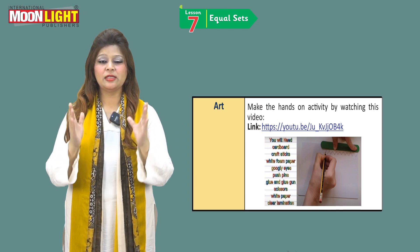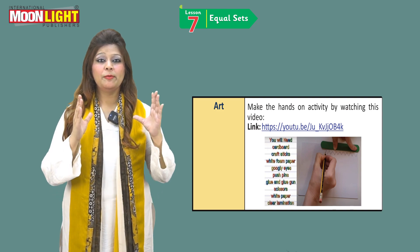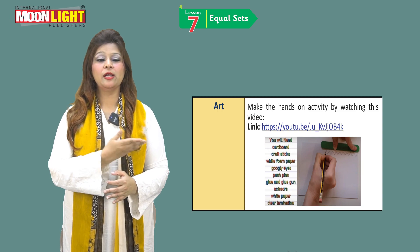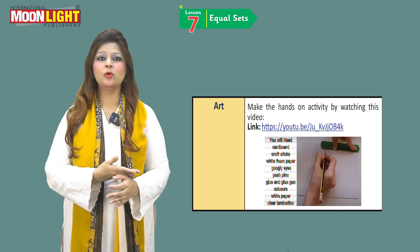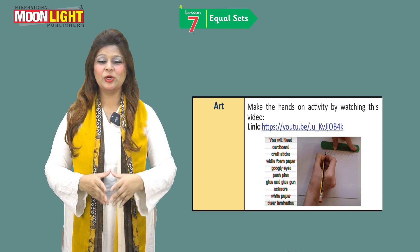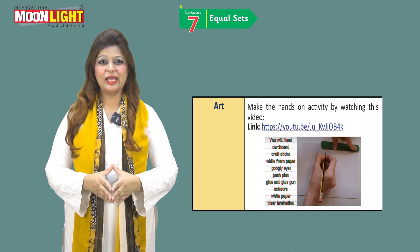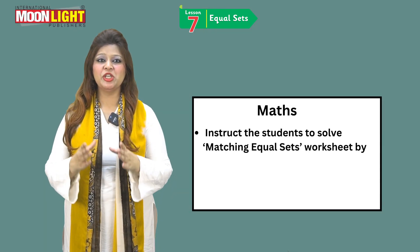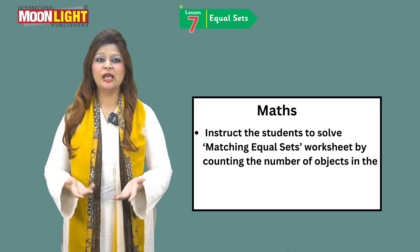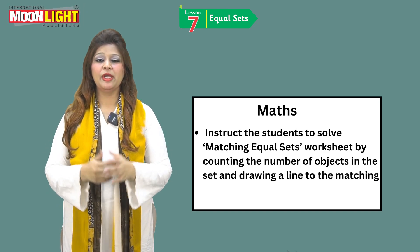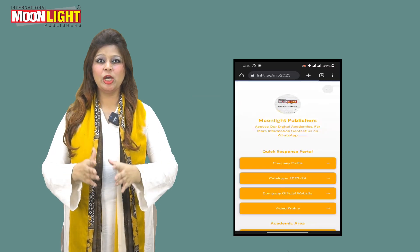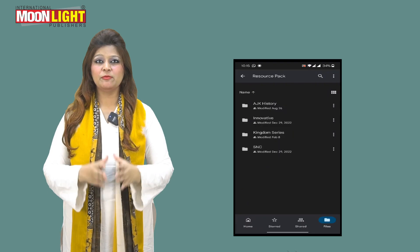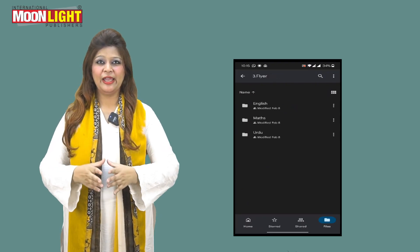This activity's full instructions are available for making the hands-on activity by watching the video. The video link is available here — you can just click and watch the video and follow the steps as instructed. For the math section activity, instruct the student to solve a matching equal sets worksheet by counting the number of objects and drawing a line to match. You can download the worksheet from our official website from the resource section, Math Stream Activity Guide 3 Flyer.